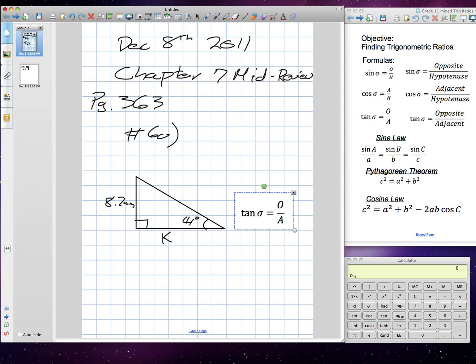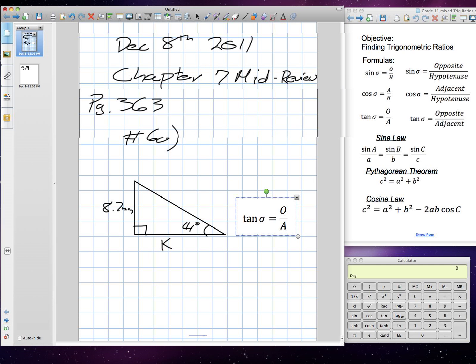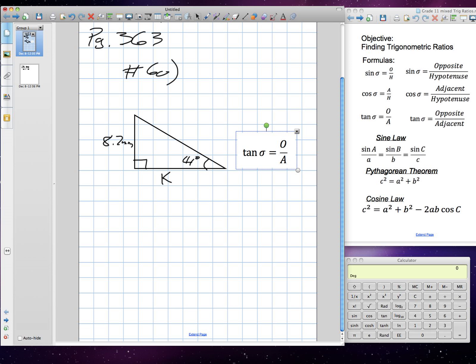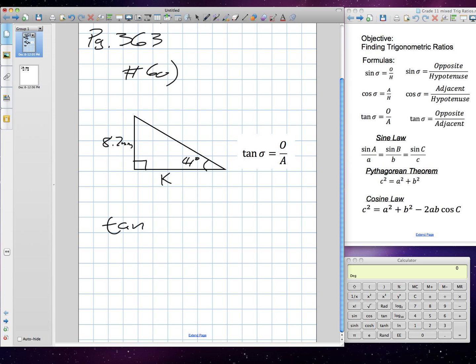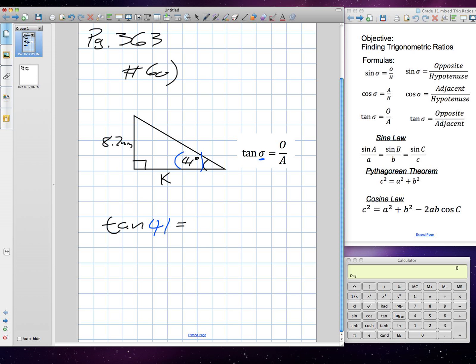So, we are going to plug in our values for them. Tangent. Our theta, in this instance, is our angle, which is 41. So, tangent 41 is equal to the opposite side of the triangle is 8.7. And the adjacent side of the triangle is the variable K. Okay. So, we're looking for our K. Now, in this question, we need to isolate K.